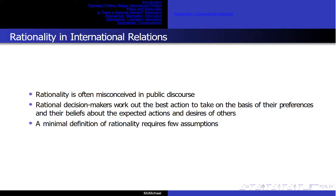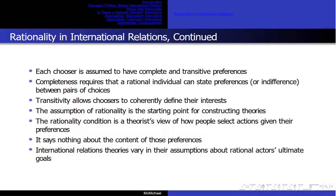Rationality is often misconceived in public discourse. Rational decision makers work out the best action to take on the basis of their preferences and their beliefs about the expected actions and desires of others. A minimum definition of rationality requires a few assumptions. Each chooser is assumed to have complete and transitive preferences. Completeness requires that a rational individual can state preferences or indifferences between pairs of choices. In this course, preference is denoted as a greater-than sign, and indifference as approximated.